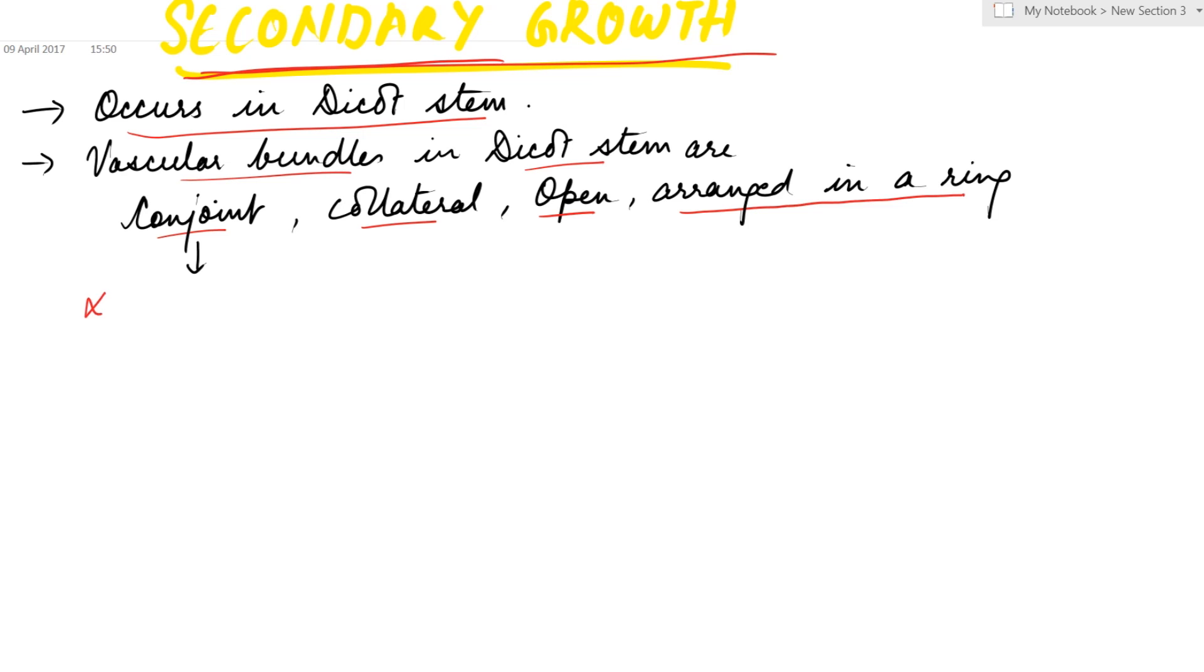Conjoint means xylem and phloem together form a bundle. Collateral means xylem is towards the inner side while phloem is towards the outer side. And open means cambium is present in between xylem and phloem.